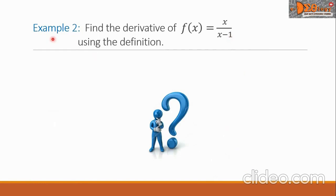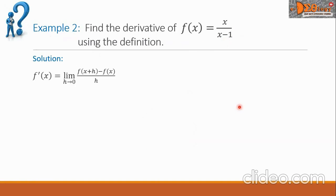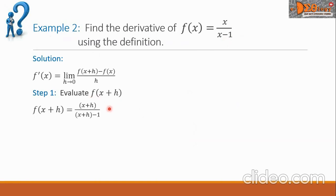Let us see the derivative of f of x equals the fraction x over x minus 1 using the definition. For our solution, we write again the limit formula of derivative. And then our step 1 is to evaluate f of x plus h. This is equal to x plus h all over the quantity x plus h minus 1. We can simplify our fraction here by removing the grouping symbol.